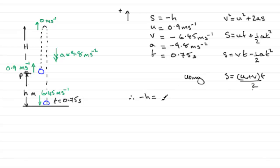So we've got U at 0.9, and then plus V, but V is minus 6.45. So minus 6.45. I'll put all of that over 2.